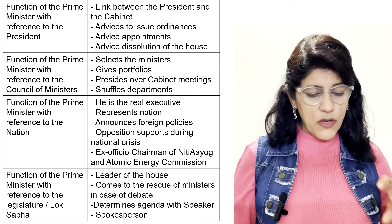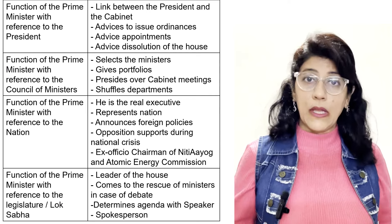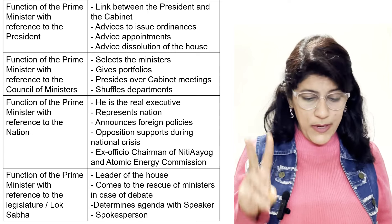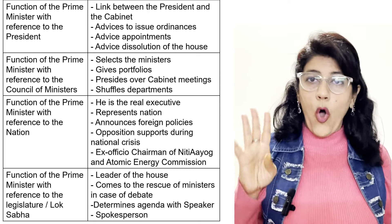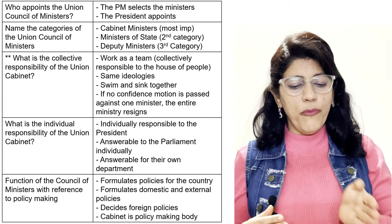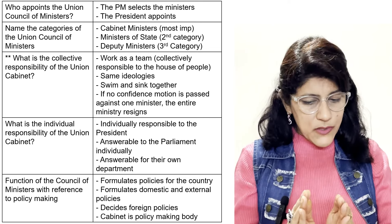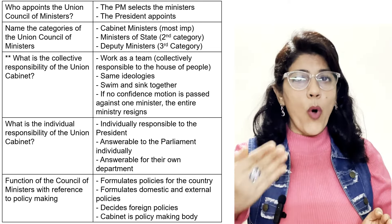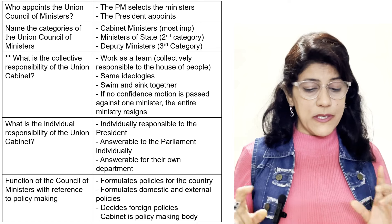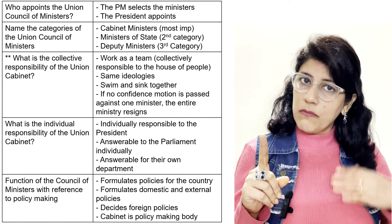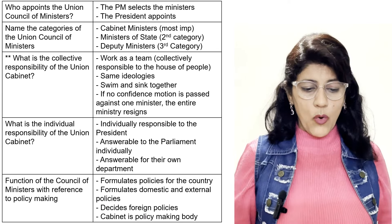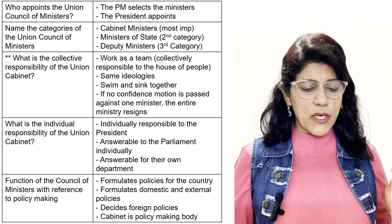Functions of the Prime Minister with reference to the legislature or Lok Sabha: leader of the house, comes to the rescue of ministers in case of debate, and determines the agenda with the Speaker as main spokesperson. Who appoints the Union Council of Ministers? The Prime Minister selects the ministers and the President appoints them. Categories of the Union Council of Ministers: cabinet ministers (most important), ministers of state (second category), and deputy ministers (third category).